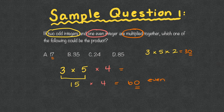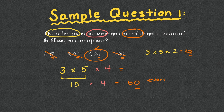Looking at the answer choices: 17 ends in a seven — that's odd. 35 ends in a five — that's odd. 24 ends in a four — that's even. And 85 ends in a five — odd. So C, which is 24, is definitely the correct answer.